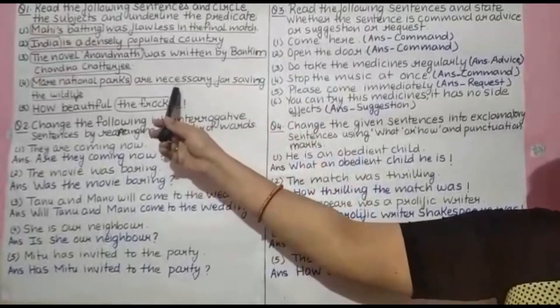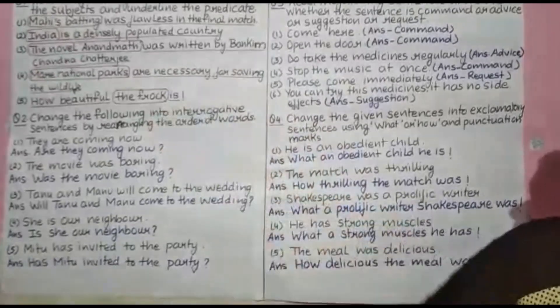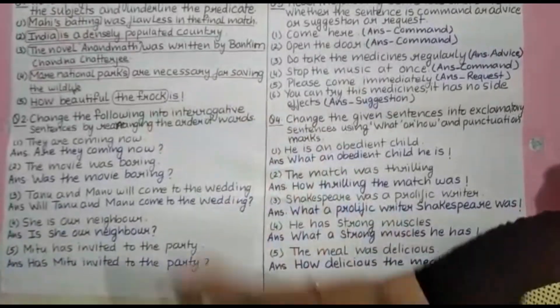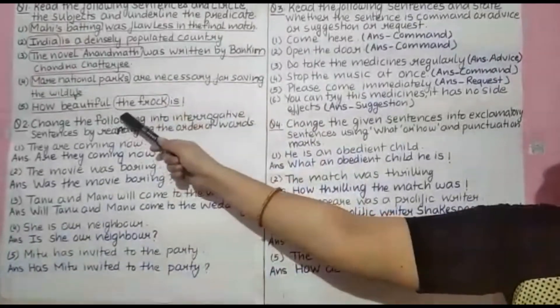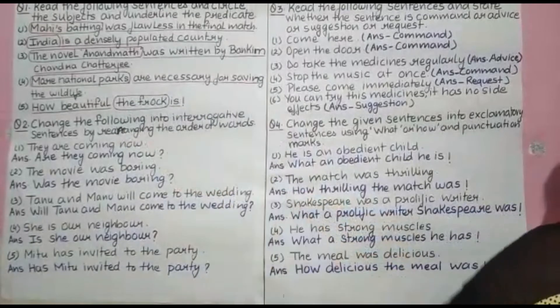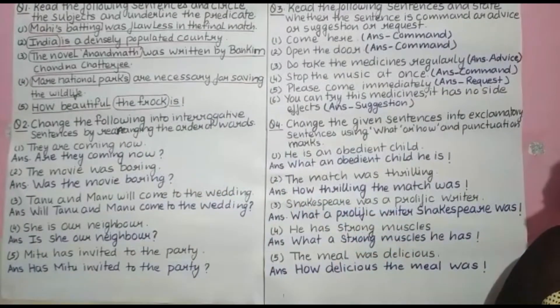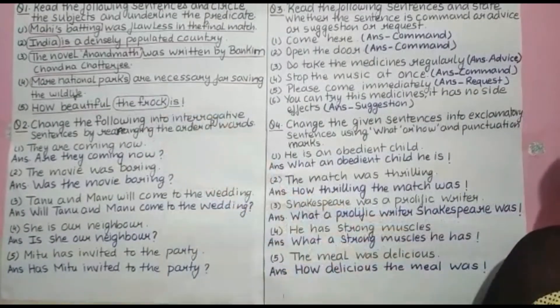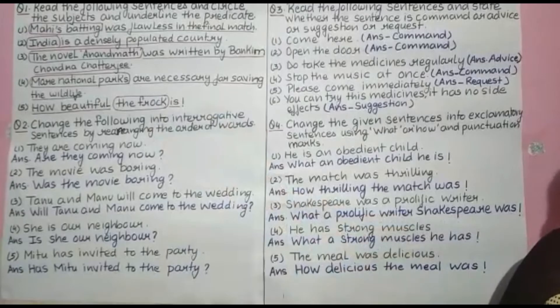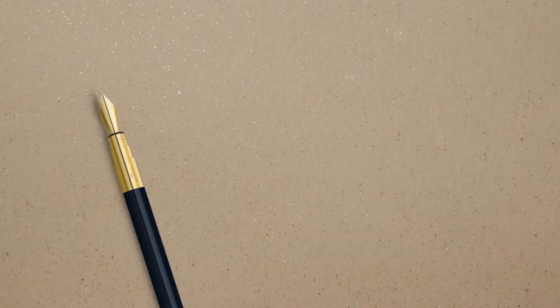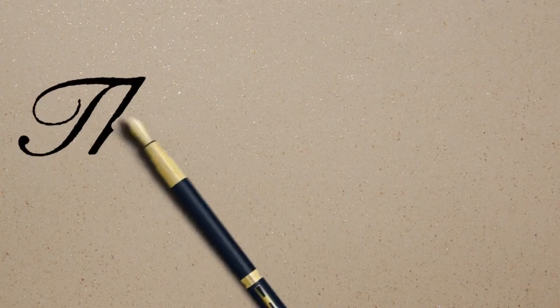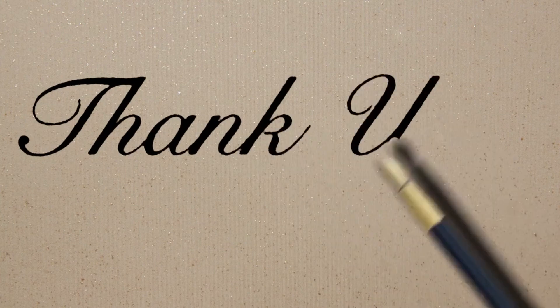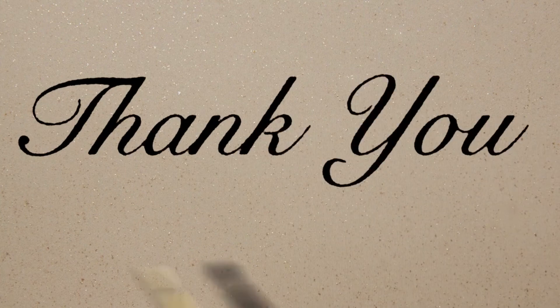'How beautiful the frock is.' In this sentence, 'the frock' is the subject and 'how beautiful' is the predicate.